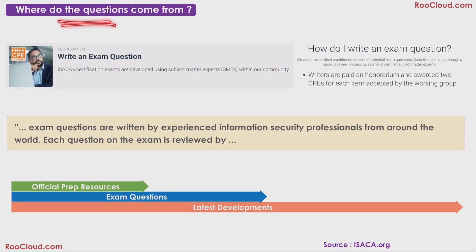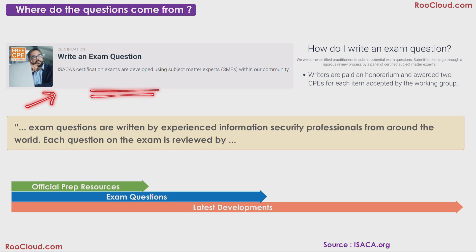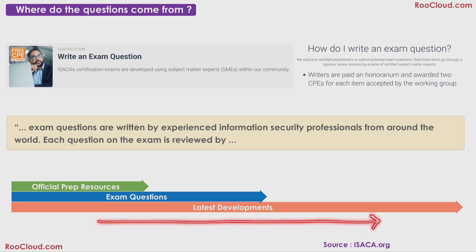Where do the questions for the AI audit exam actually come from? The manual says that the exam questions are written by experienced IS professionals from around the world, then reviewed by a working group, and accepted questions go into the exam database. On the ISACA website, you will also find that periodically SMEs are called upon to submit questions. If the questions are accepted, the SMEs will get CPE points, which are required to keep your certification active. I highlight this point to stress on the need to keep yourself updated on what is happening in the fields of AI and InfoSec audit. The official manual and practice questions are updated about once a year, whereas the latest developments in AI and IS will have gone a lot further, and since the questions are being created by SMEs from across the world, these will be more up to date than the official prep material.